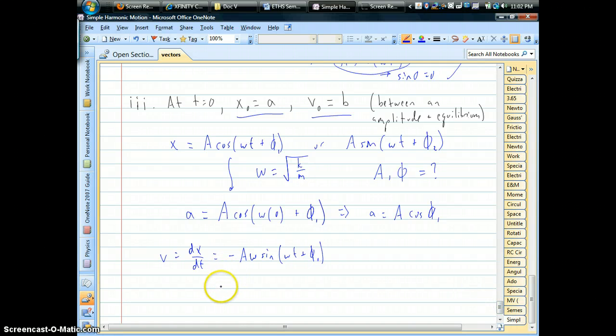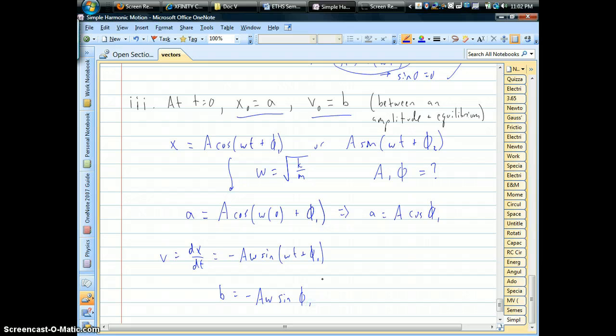So we could go ahead and say at time equals zero, the initial speed is little b. And that would be equal to negative amplitude times angular frequency times sine of the phase angle. So now we would have two equations for two unknowns.